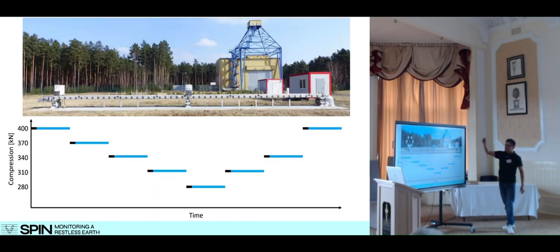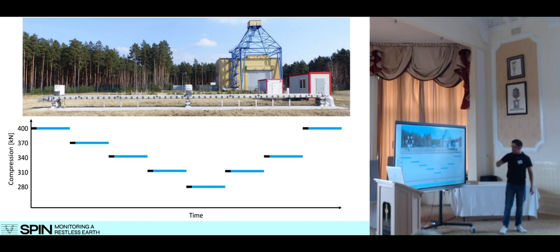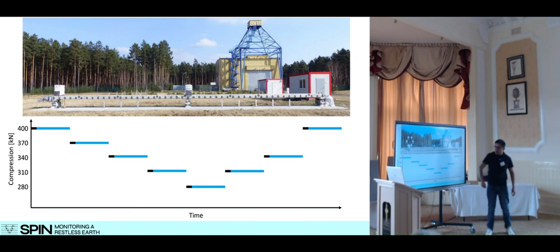This is a side view of this structure. In this part, you can observe the pretension system that allows us to compress the structure under controlled manner. We use this pretension system to compress the structure at these five different compression states. And at each compression state, we made two different experiments.